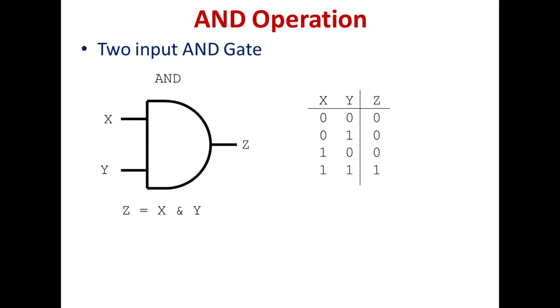Any logical operation can be represented in the form of a truth table which may contain all the possible input combinations with their corresponding output. First, we will see the AND operation. The figure shows the symbol of a two-input AND gate. The two inputs are A and B and the output is Y. The output of an AND gate is 1 if and only if all the inputs are 1. The expression for AND gate is Y = A · B.